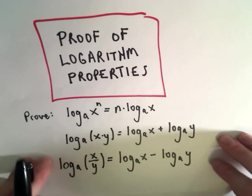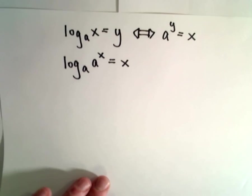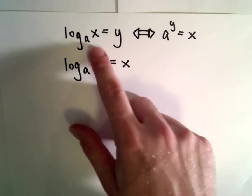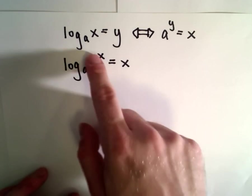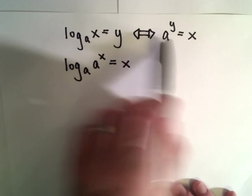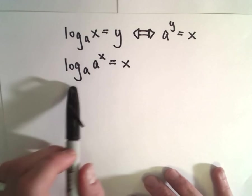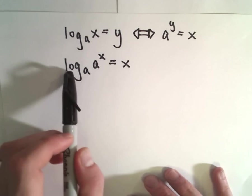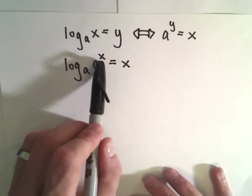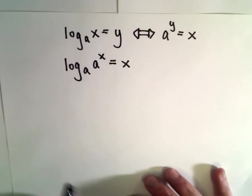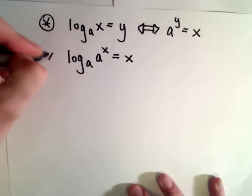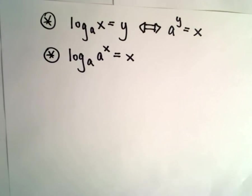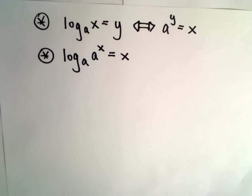To justify these three results, the only things I'm going to use are the definition of a logarithm — you can switch from logarithmic to exponential notation — and also this cancellation property that says log base a of a raised to the power of x simply equals x. I'll also use properties of exponents.